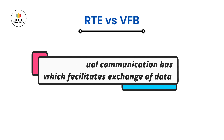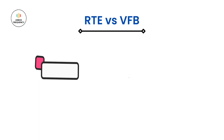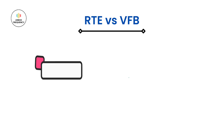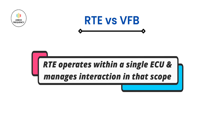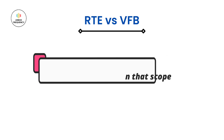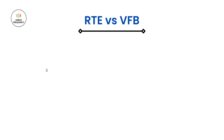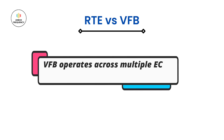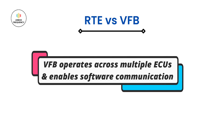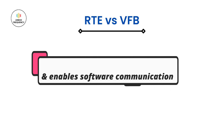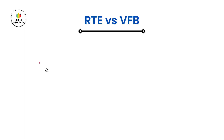The Virtual Functional Bus abstracts the physical communication network and provides a standardized communication infrastructure. Moving on to the second difference, which is based on scope: the RTE operates within a single ECU and manages the behavior and interactions of software components within that specific ECU. Whereas Virtual Functional Bus operates across multiple ECUs and enables communication between software components located on different ECUs, providing a virtualized communication bus that abstracts the underlying physical network.